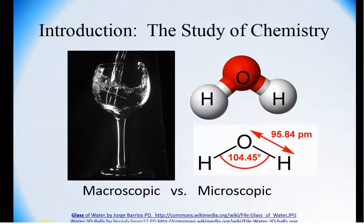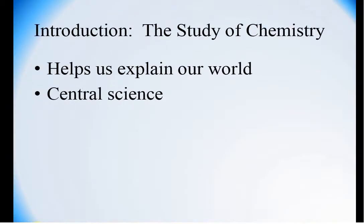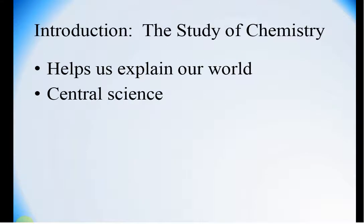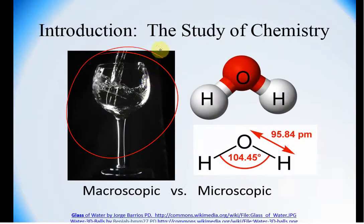For example, on a microscopic level, water has one oxygen and two hydrogens with a very specific bond angle, but what we really see macroscopically is the glass of water. We are going to use what we see to help us explain our world. We're going to take this macroscopic glass of water, for example, to draw information about the molecules that are present.